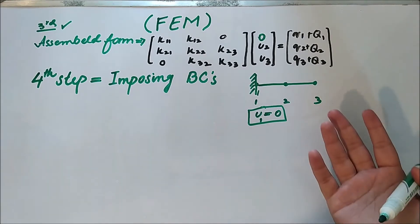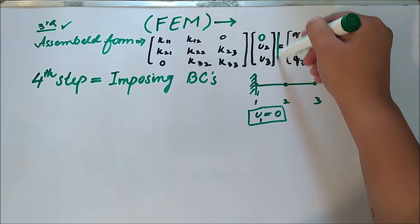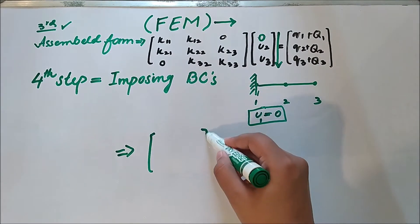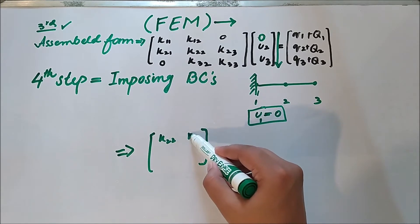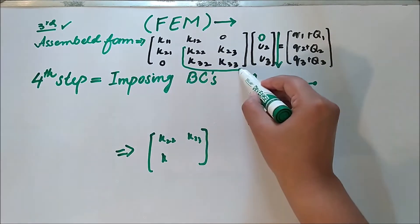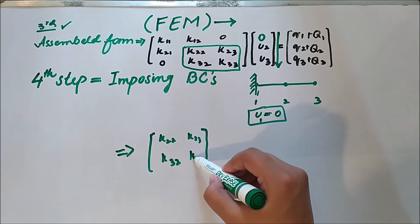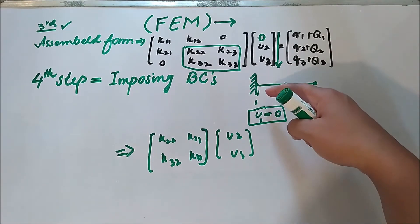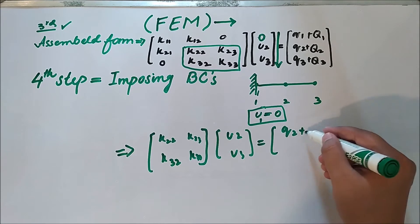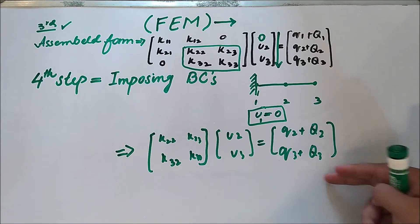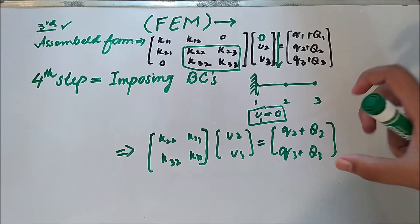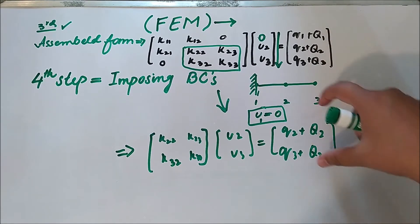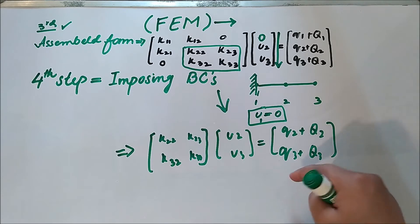If we plug the boundary condition into the system, we know from basic matrix multiplication that we will end up with a reduced two-by-two stiffness matrix with entries k22, k32, k33, and u2, u3 — because the displacement at the first node is equal to zero. This reduced form is known as the condensed form, or the reduced form, because we have plugged in the boundary conditions and now have a smaller version of the system.